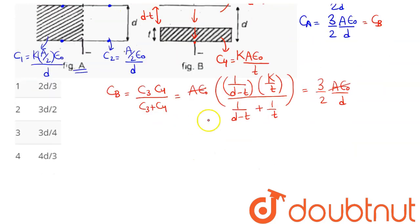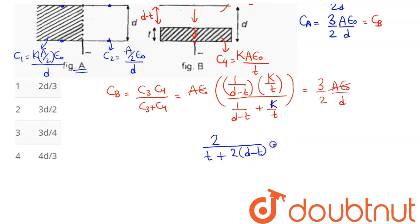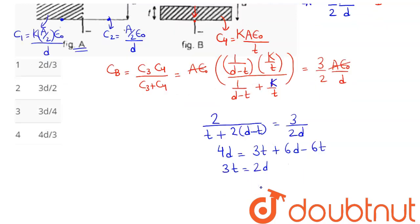Substituting k = 2 and simplifying further: the numerator is 2 divided by t(d − t), and the denominator after taking LCM becomes t + k(d − t) = t + 2(d − t). Setting this equal to 3/(2d) and cross-multiplying, we get 4d = 3t + 6d − 6t, which simplifies to 3t = 2d. Hence, the thickness t = 2d/3.